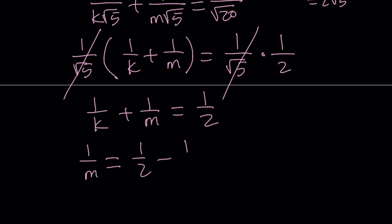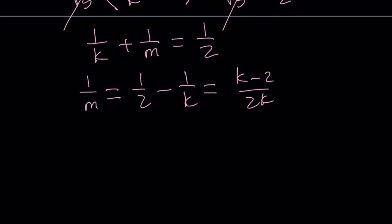This is going to be 1 half minus 1 over k. This can be written as k minus 2 over 2k. If you flip both sides, m becomes 2k over k minus 2.